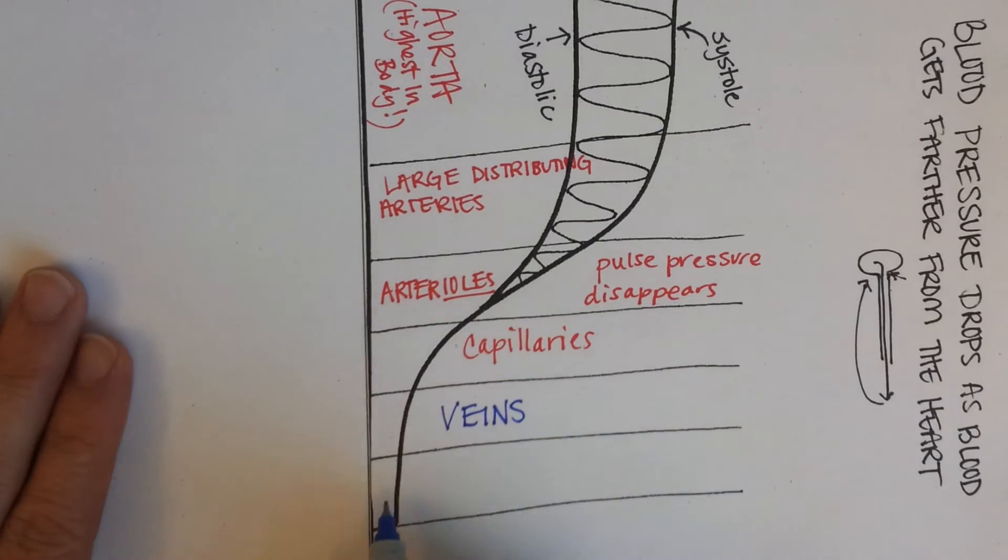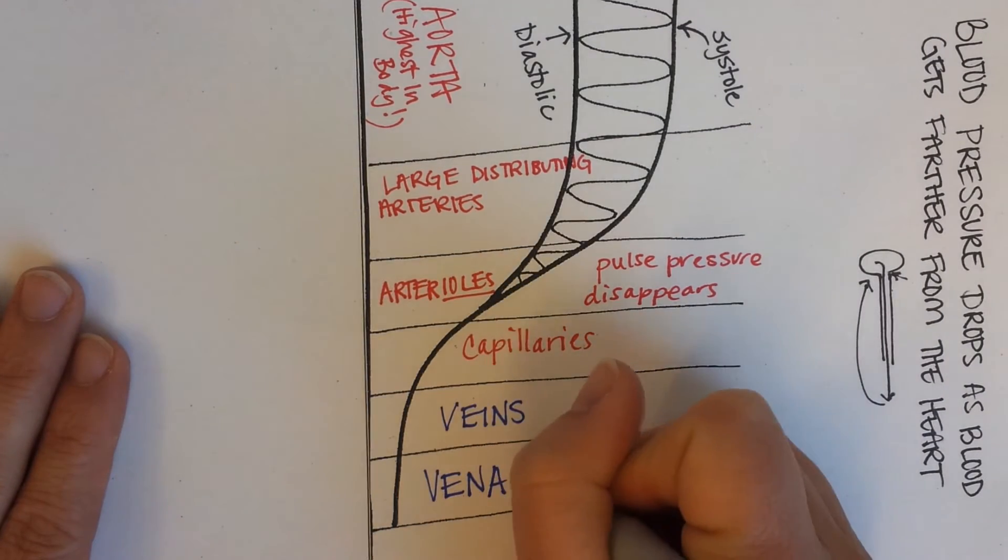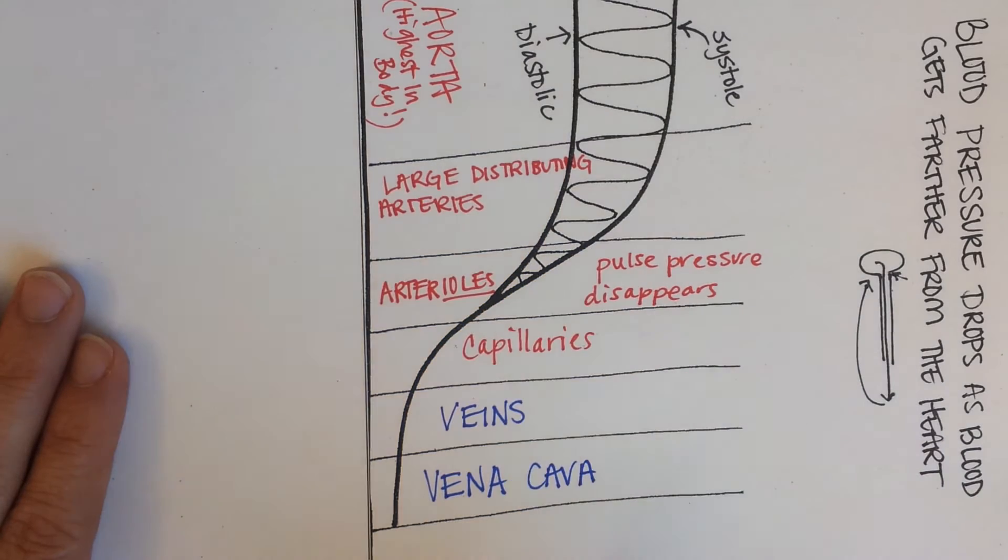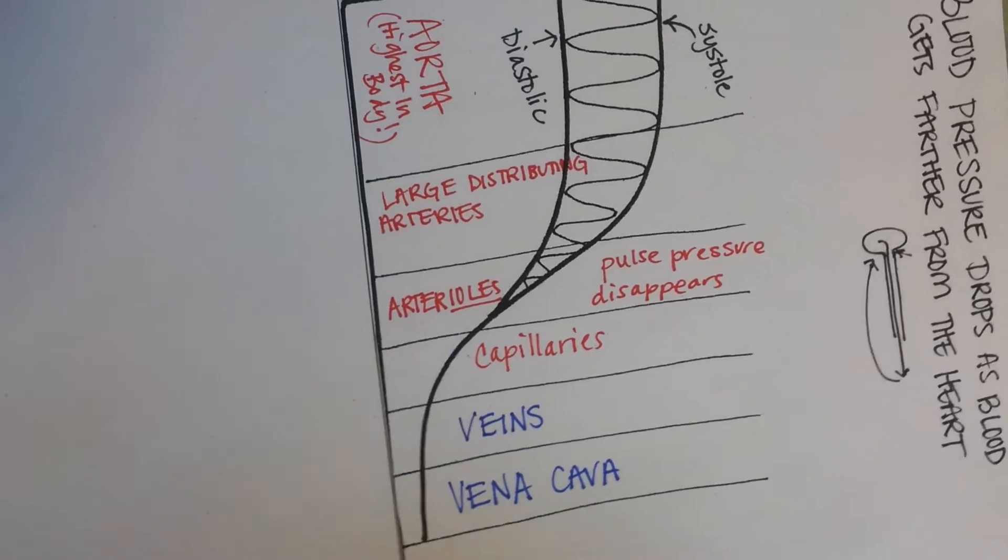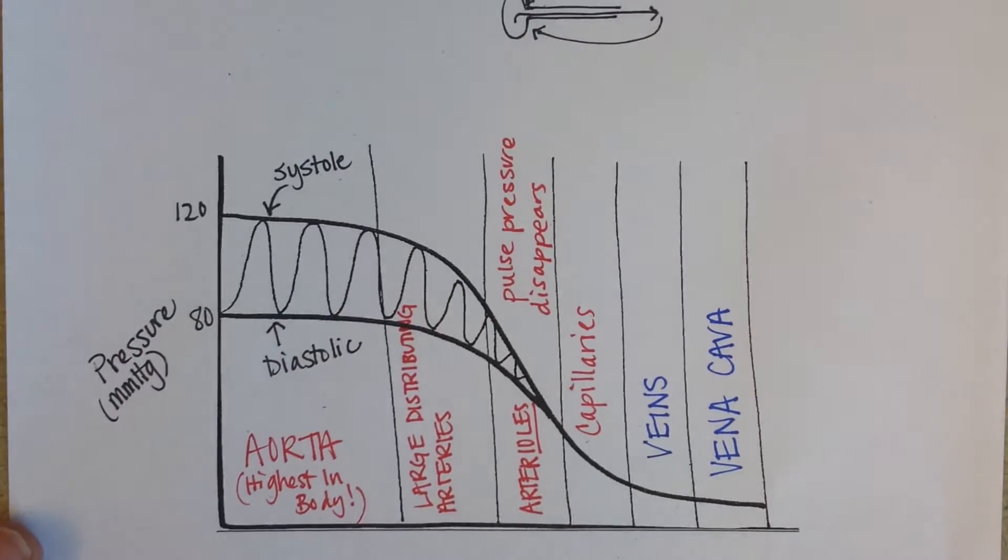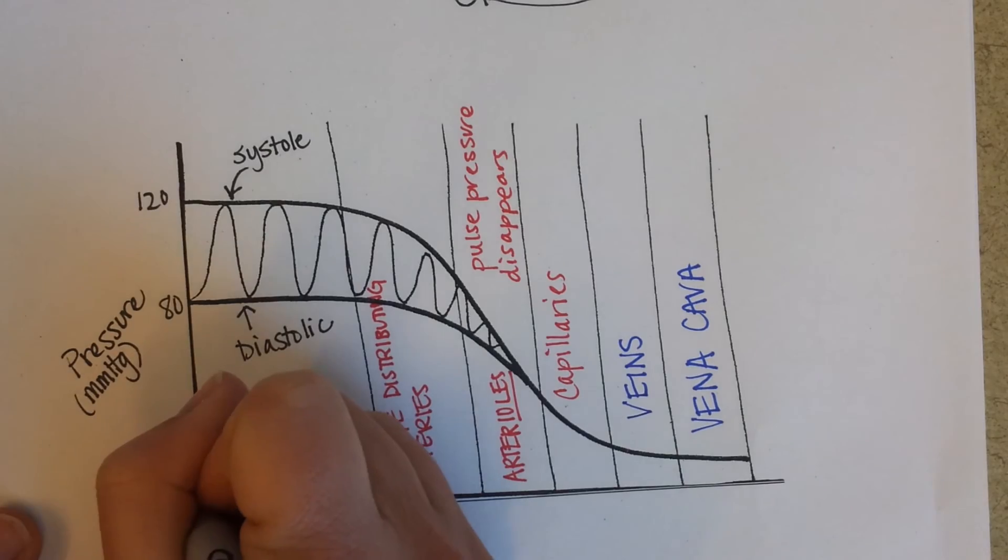And then, last but not least, the very biggest vein in the body, the vena cava, is going to have the lowest pressure and in fact, I'm going to turn the paper again, if you look at what the pressure might be in the vena cava, it is so low, we're talking somewhere around three millimeters of mercury.